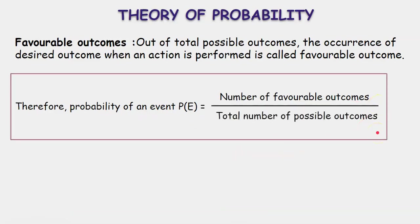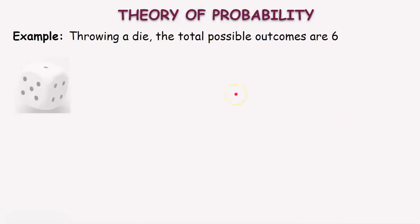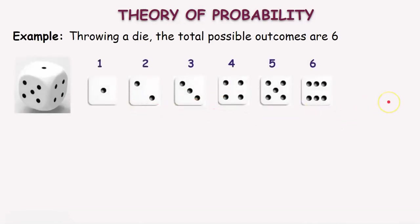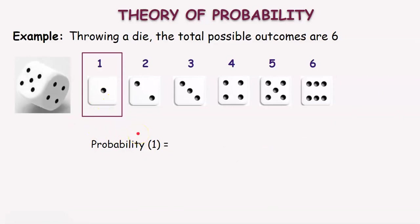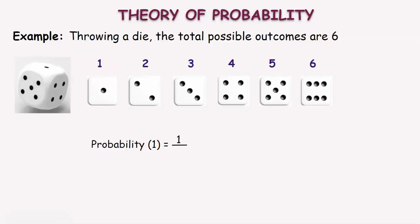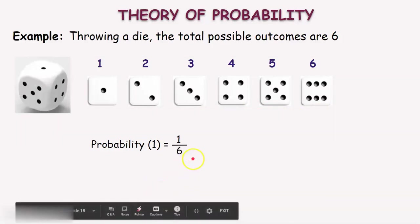Now let us calculate probabilities of some events. In the case of throwing a die, the total possible outcomes are 6. Let us find the probability of getting 1. There is only one way to get 1 on a die, so 1 is our favorable outcome, written on the numerator, divided by the total number of possible outcomes, 6, in the denominator. Therefore, the probability of getting 1 is equal to 1 by 6.